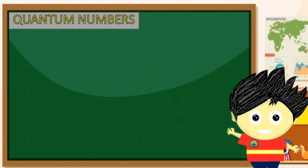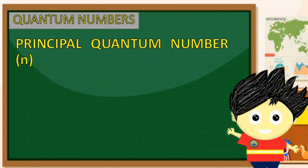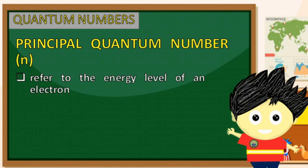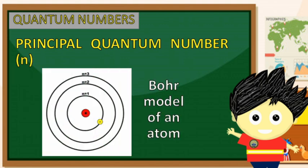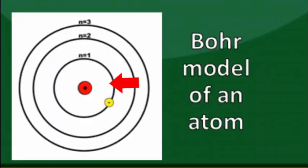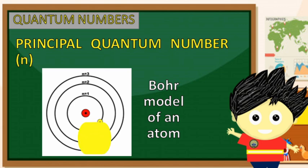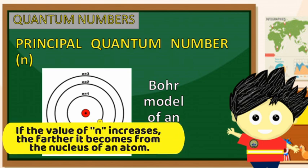Ngayon, alamin natin ang katangian ng bawat quantum numbers. Simulan natin sa tinatawag nating principal quantum number. Ang principal quantum number ay tumutukoy sa energy level ng isang electron. Ito ay nire-represent ng small letter N, at ito ay tumutukoy sa any positive integer value. Nakita na natin ito sa Bohr model kung saan ang bawat orbital ay may respective energy level. Nangangahulugan lamang nito na kapag mas malaki ang value ng ating N, mas lumalayo ito sa nucleus ng isang atom.